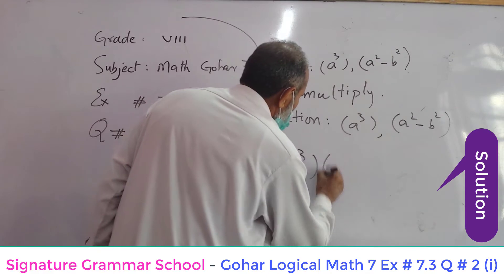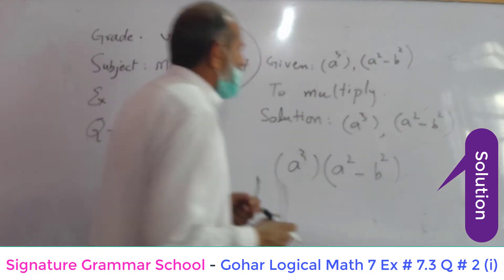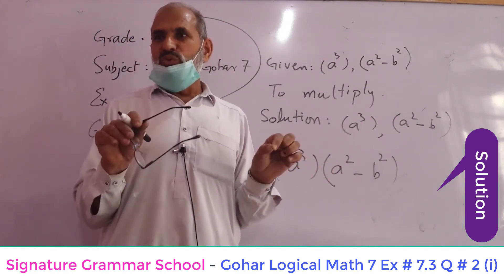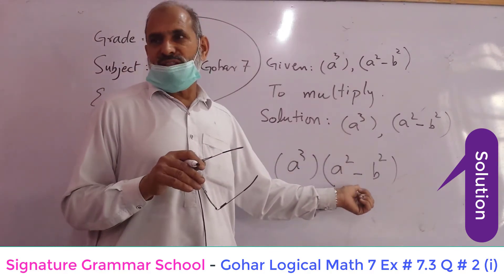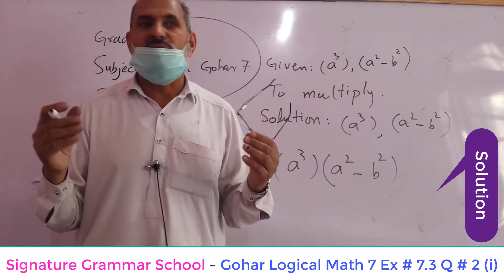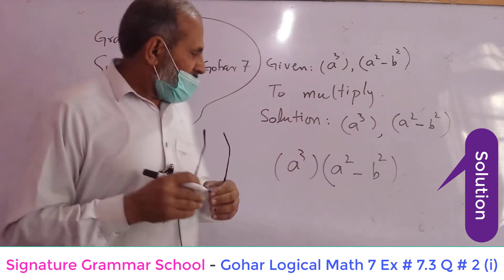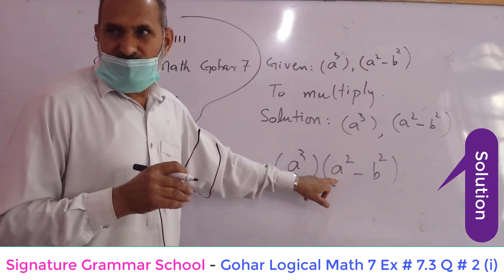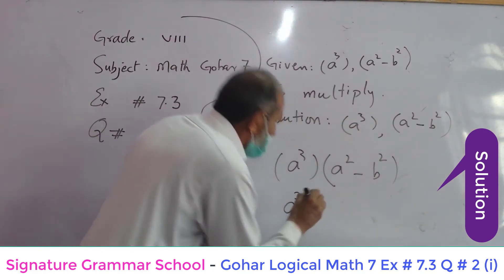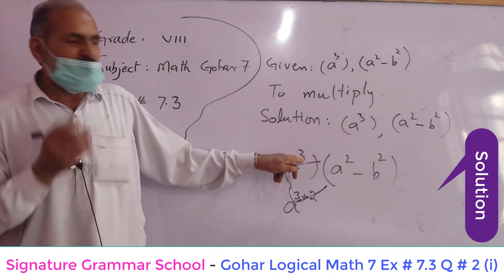Horizontally, we multiply a cube with a square minus b square. When you remove the comma between two values, it means that this value is multiplied with this value. In multiplication, we add the exponents of the same variable. Here it's a cube and here it's a square, so we add the exponents: three plus two.